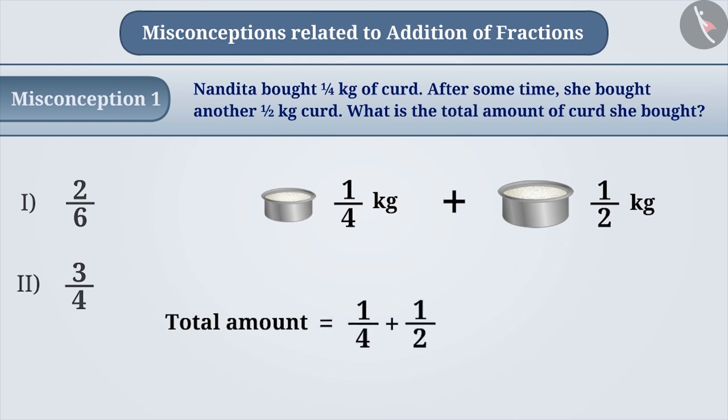While adding them, the numerators and denominators are added separately. Therefore, the addition of 1/4 and 1/2 is written as 2/6. This is an incorrect understanding.